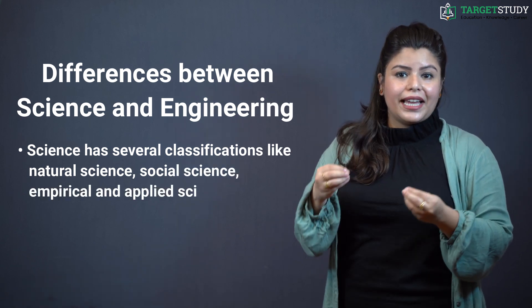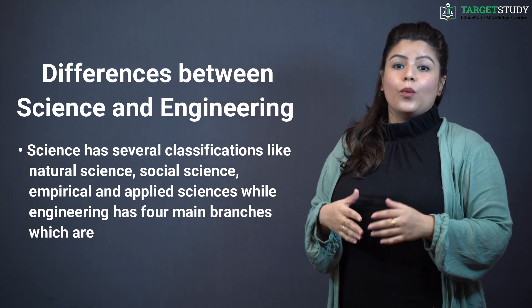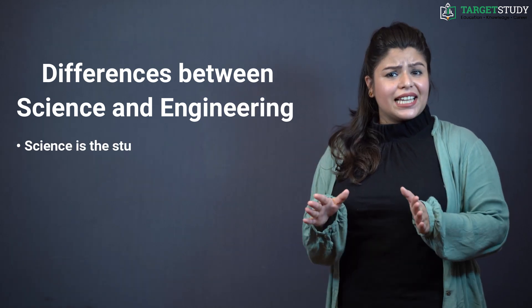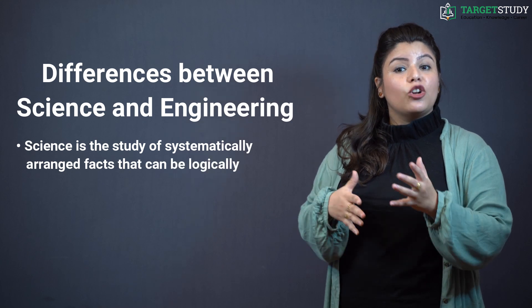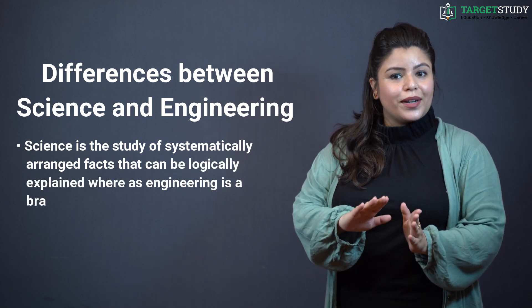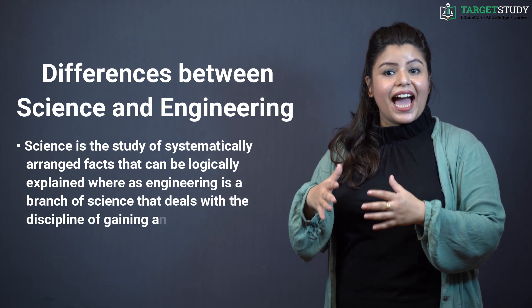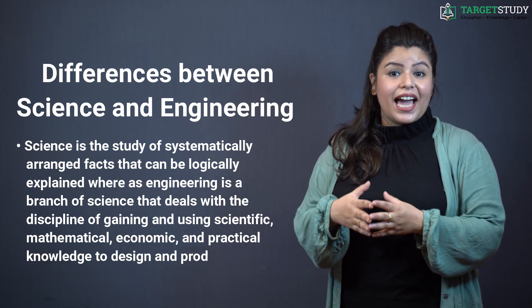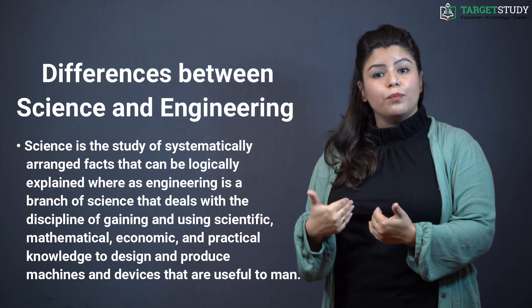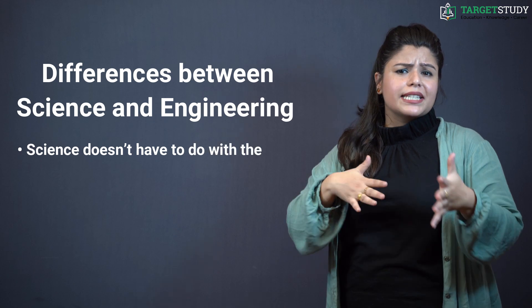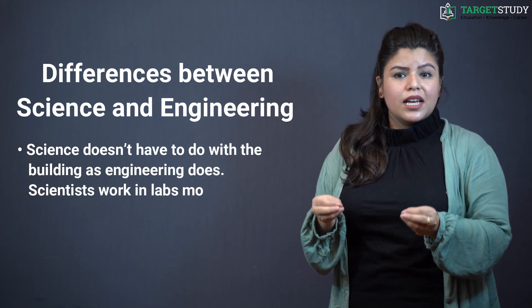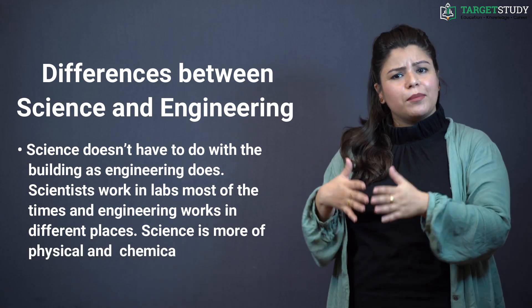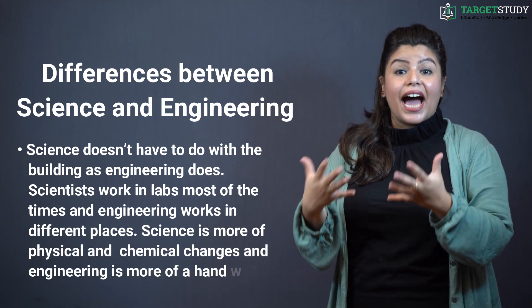Science has several qualifications like natural sciences, social sciences, empirical and applied sciences while engineering has four main branches which are chemical, mechanical, electrical and civil engineering. Well, science is the study of systematically arranged facts that can be logically explained. Whereas, engineering is a branch of science that deals with the discipline of gaining and using scientific, mathematical, economic and practical knowledge to design and produce machines and devices that are useful to man. Science doesn't have to do with building as engineering does. Scientists work in labs most of the time and engineers work in different places. Science is more of physical and chemical changes and engineering is more of hands-on working projects.